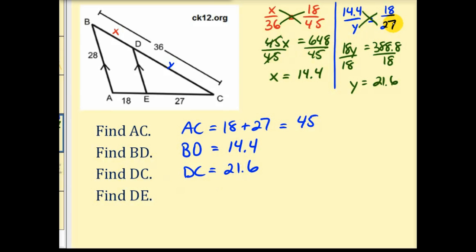Now I do want to mention this is not the only proportion that we could use to determine the length of DC, which we labeled Y. We could have used a proportion Y to 36 must equal 27 to AC, which is 45. And the result of course would be the same.